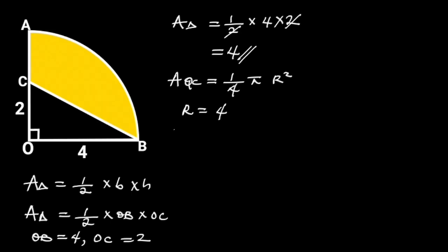It follows that the area of the quarter circle will be 1 over 4 pi times 4 squared. Which can be written as 1 over 4 pi, times 4, times 4.